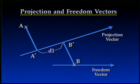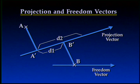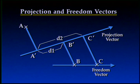In TrueType, we use two vectors called the projection and freedom vectors in order to apply diagonal control. The projection vector, as in projective geometry, is the vector along which a distance is measured. The freedom vector is the vector along which a point is moved until its projection on the projection vector assumes a required value. We start with the points A and B. A' and B' denote their projections on the projection vector. D1 is the distance between A and B as measured along the projection vector. We want to increase this distance to D2 by moving B along the freedom vector. The projection and freedom vectors are two of the most powerful tools in TrueType.